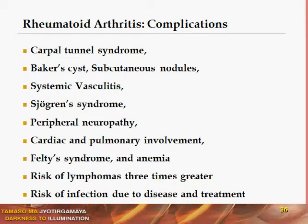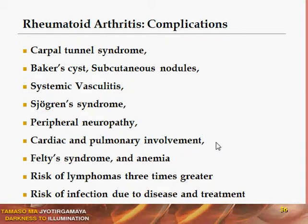The complications of rheumatoid arthritis include: carpal tunnel syndrome, Baker's cyst — a cyst on the popliteal aspect of the knee joint which can sometimes burst and produce an acute picture — subcutaneous nodules in and around the joints, systemic vasculitis, Sjögren's syndrome, peripheral neuropathy, entrapment neuropathies, cardiac and pulmonary involvement including myocarditis, pulmonary nodules, pleural effusion, and Felty's syndrome — a combination of anemia, thrombocytopenia, rheumatoid arthritis, and splenomegaly.